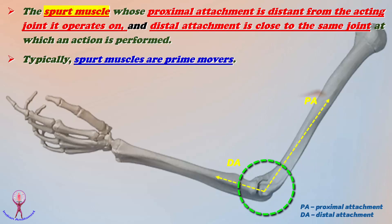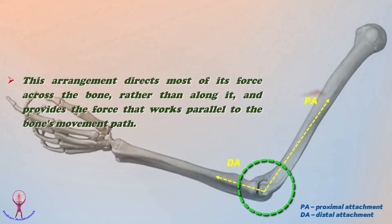Typically, the spurt muscles are prime movers. This arrangement directs most of its force across the bone rather than along it, and provides the force that works parallel to the bone's movement path.